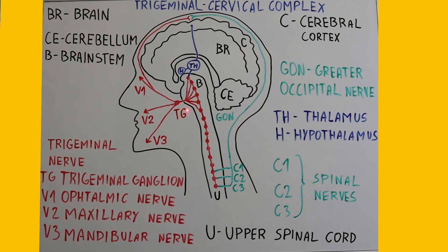The ophthalmic nerve is V1, the maxillary nerve is V2 and the mandibular nerve is V3. The trigeminal nerve has a very extensive network of nuclei that start in the brainstem, including the midbrain, pons and medulla oblongata, and it extends down to the upper spinal cord. The sensory trigeminal nerve nuclei are the largest of the cranial nerve nuclei. The small red dots on the diagram represent these nuclei.